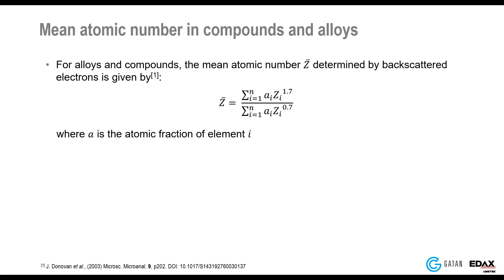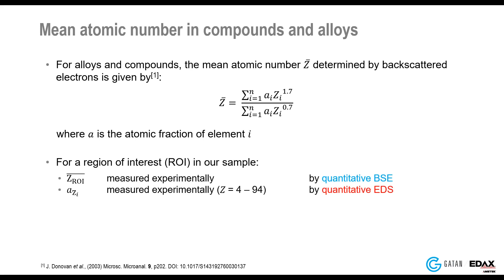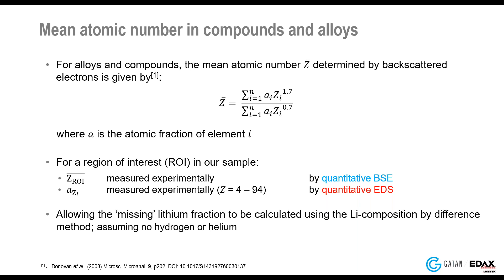The mean atomic number, as measured by backscattered electrons, is given by a formula published in the literature by John Donovan. Importantly, the mean atomic number depends only on the atomic fraction of the elements present. So for a region of interest in our sample, we can measure the mean atomic number by quantitative backscattered electron imaging, and we can determine the atomic fraction of elements with atomic number greater than four by quantitative EDS. By comparing these two different signals, this allows us to calculate the missing lithium fraction.